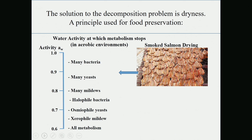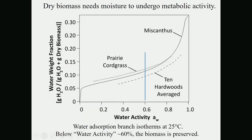Here is a chart: bacteria require about 95% water activity; yeast about 85%; various molds even less — but finally at 0.6 or 60% water activity, metabolism comes to a stop. The ancient natives knew about this — for example, salmon in the Pacific Northwest were dried by the natives in summertime so they could eat the salmon in wintertime. Drying is very effective.